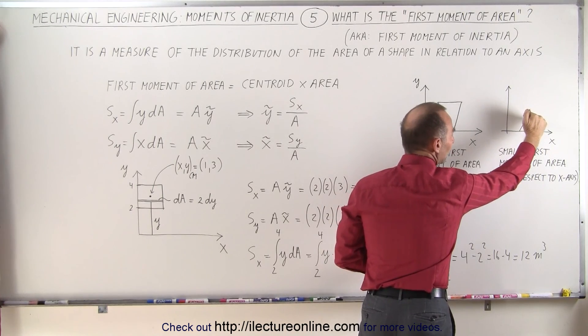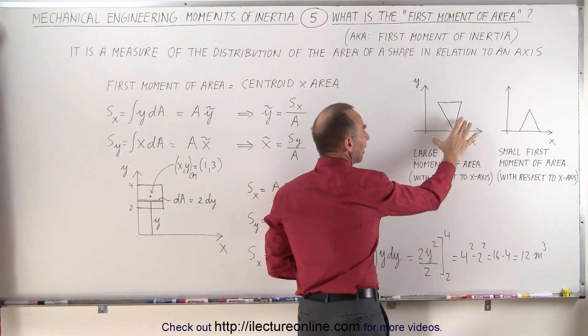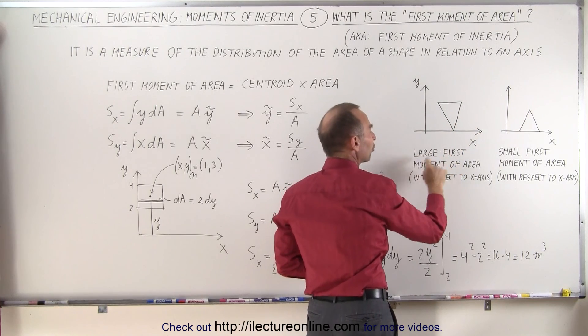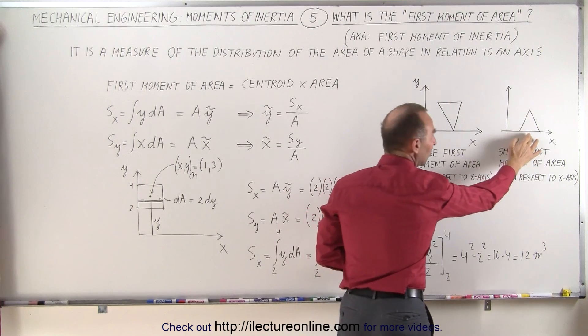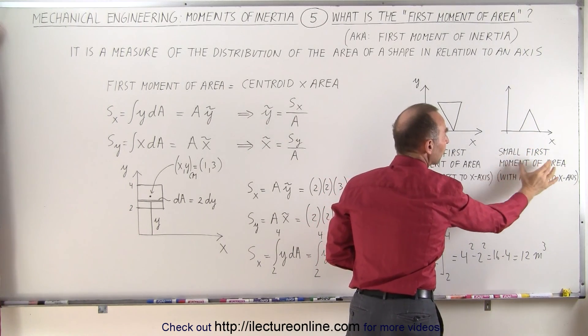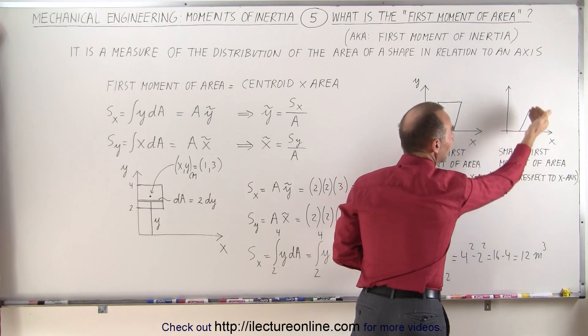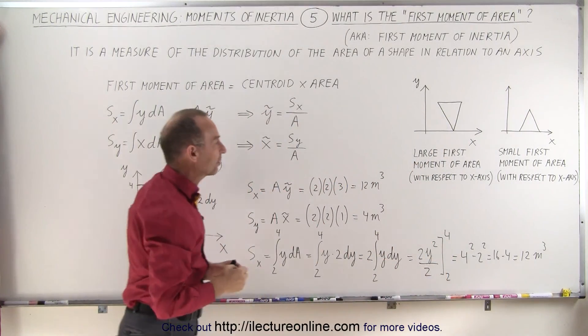This means that on the left side we have a large first moment of area with respect to the x-axis. Compared to this one, we have a small first moment of area with respect to the x-axis because most of the mass is much closer to the axis.